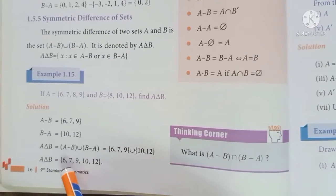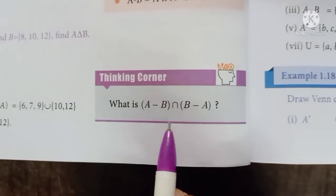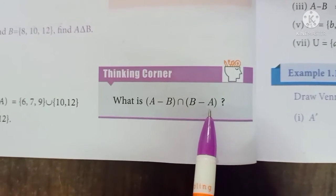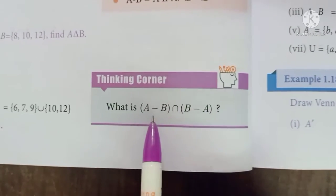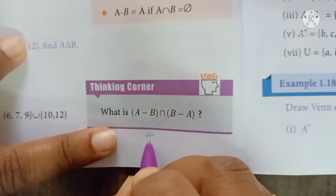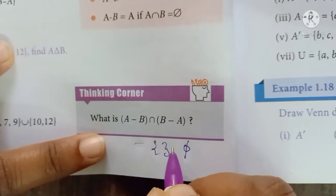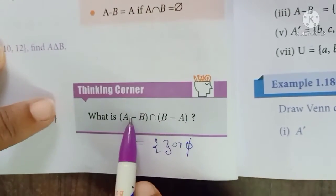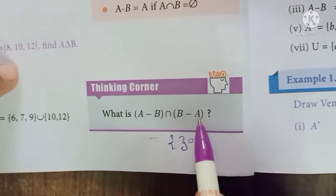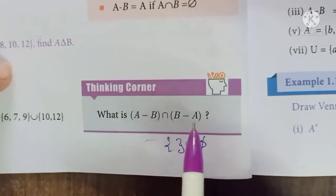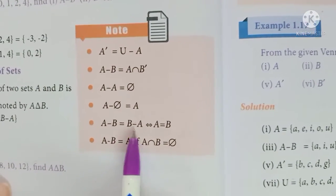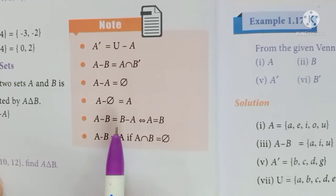Thinking corner: what is (A-B) intersection (B-A)? For symmetric difference, if we take the intersection of A-B and B-A, there are no common elements.